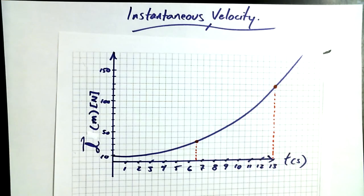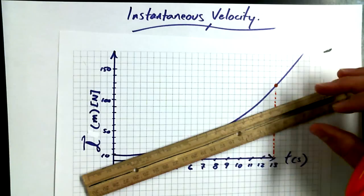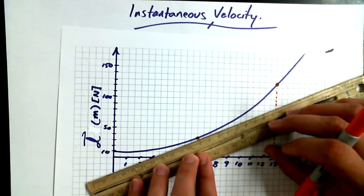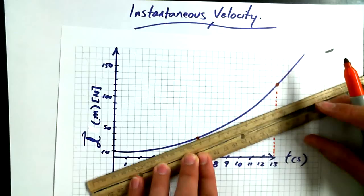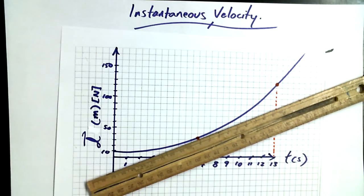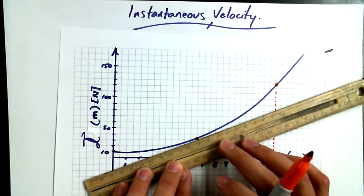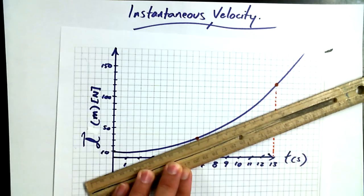So this is perhaps the most seductive dance in all of graphical analysis — it's called the tangent. So you take the ruler and you gently just kiss your curve.